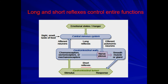Any stimulus generated from the GIT lumen stimulates the receptors present in the wall of the GIT — it may be a chemoreceptor, an osmoreceptor, or a mechanoreceptor. The stimulation of these receptors then stimulates the plexuses present in the GIT wall; it can be the myenteric plexus, the submucosal plexus, or both.